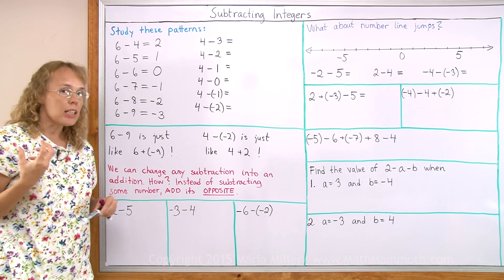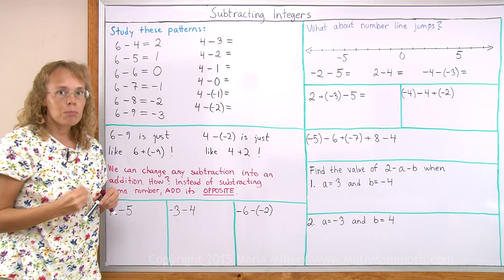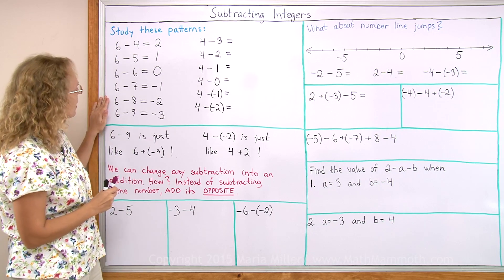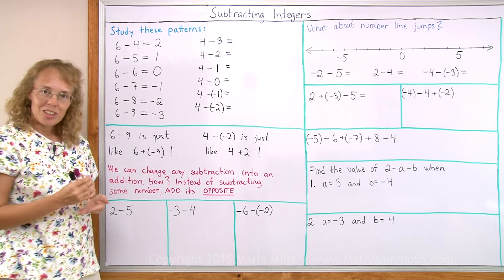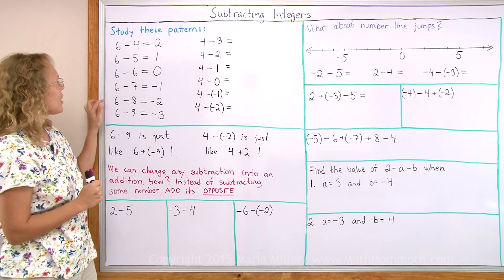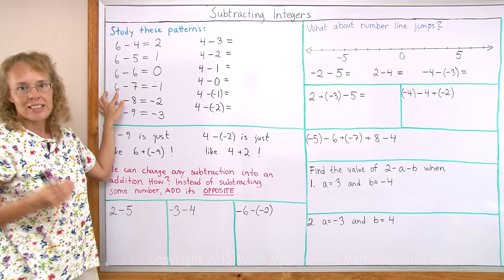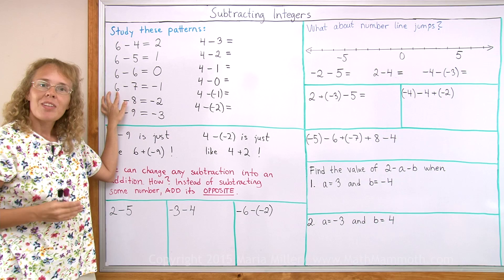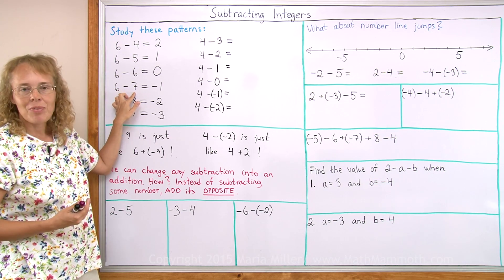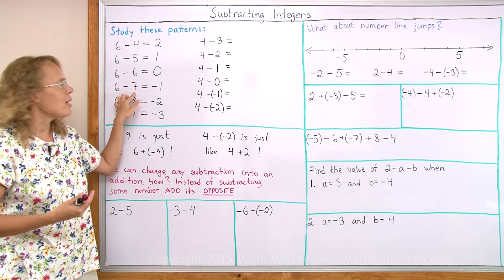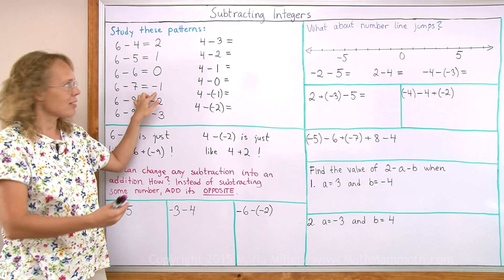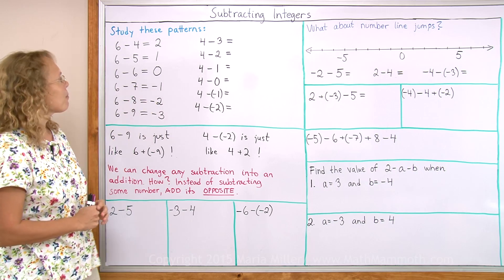If you have studied number line jumps, you probably understand it easily, or you can think of it as money. Let's say you have $6 and you want to buy something that is $7. You cannot buy it — it would go $1 into debt, negative 1.